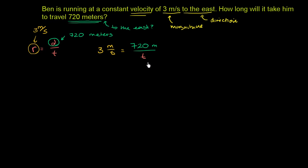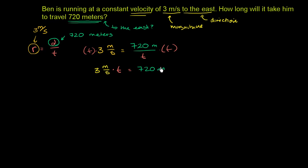We can algebraically manipulate this. Multiply both sides by time: 3 meters per second times time equals 720 meters, because the time terms on the right cancel out. That makes sense units-wise, because seconds cancel with the seconds in the denominator, leaving just meters.